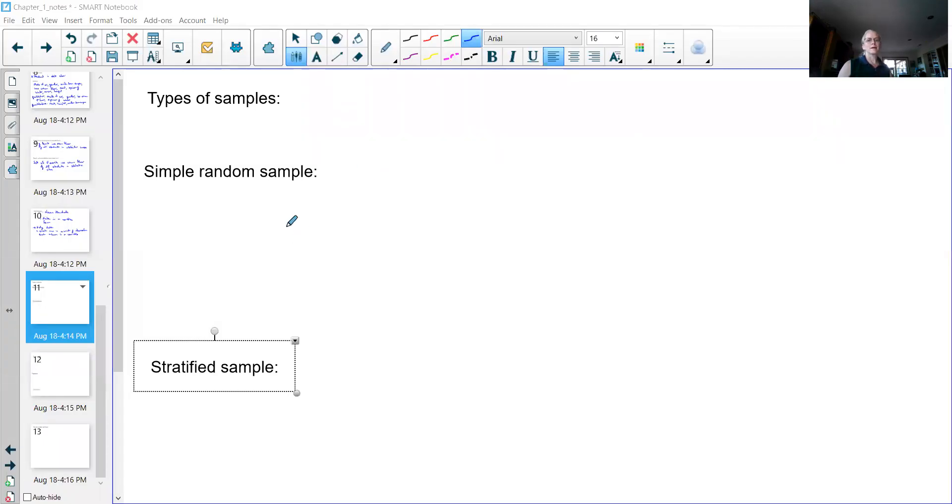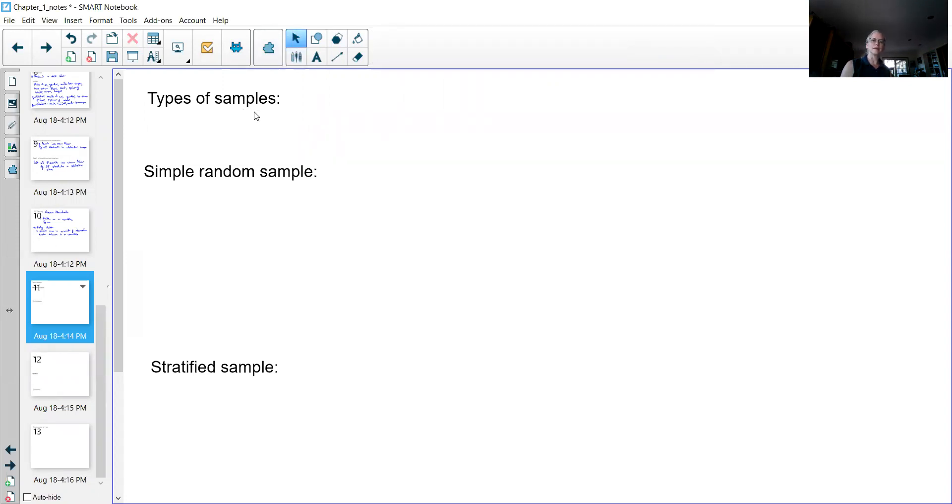If we want to collect data and actually do something with it, we usually need a sample. We want to talk about the different types of samples that we have to deal with when we're working, so we're going to talk about how we do certain samples, what they look like, and how they fit together. The first one is called a simple random sample.